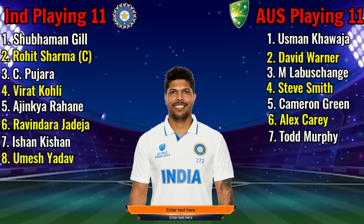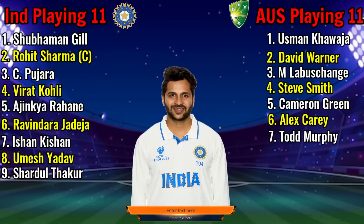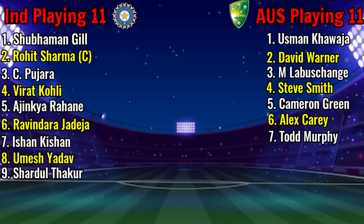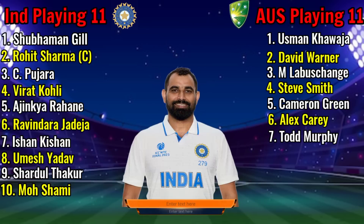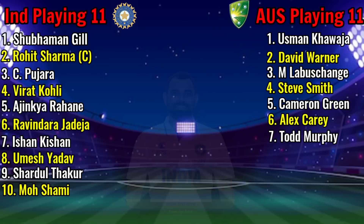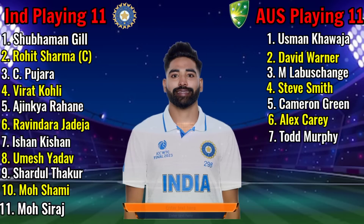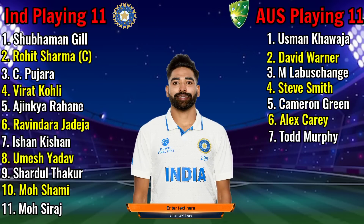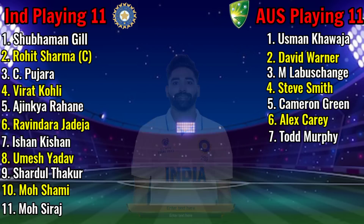Team India bowlers: Number 8, Umish Yadow, right-hand fast bowler; Number 9, Sardul Thakur, right-hand fast bowler; Number 10, Muhammad Sami, right-hand fast bowler; Number 11, Muhammad Siraj, right-hand fast bowler.